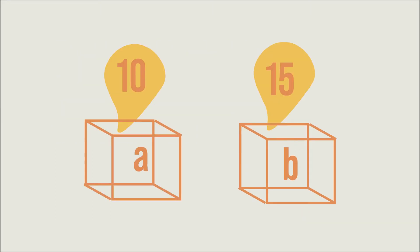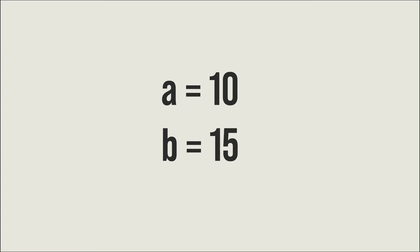Consider we have two empty boxes, one is 'a' and another is 'b'. If you want to store a value of 10 inside box 'a' and 15 inside box 'b', in Python we call this process assigning a value to a variable. So we say a equals 10 and b equals 15. Now container 'a' holds 10 and container 'b' holds 15.